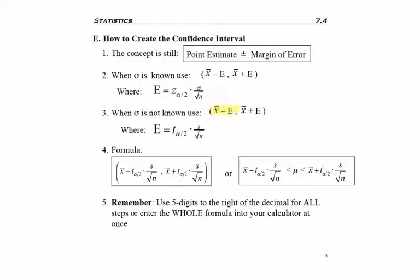So taking x̄ plus or minus E, where we know what E looks like, we have this formula for a confidence interval where we have our lower number first because we subtracted the margin of error, and our larger number second,